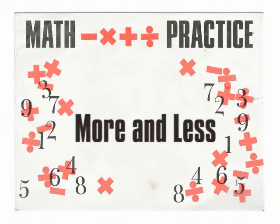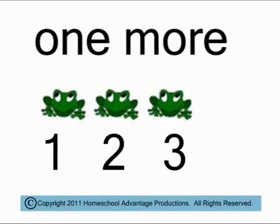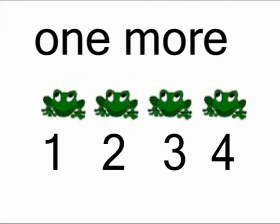Today, let's learn about more and less. Let's say you have three frogs. How many frogs is one more? One more frog makes four frogs. One more than three is four.